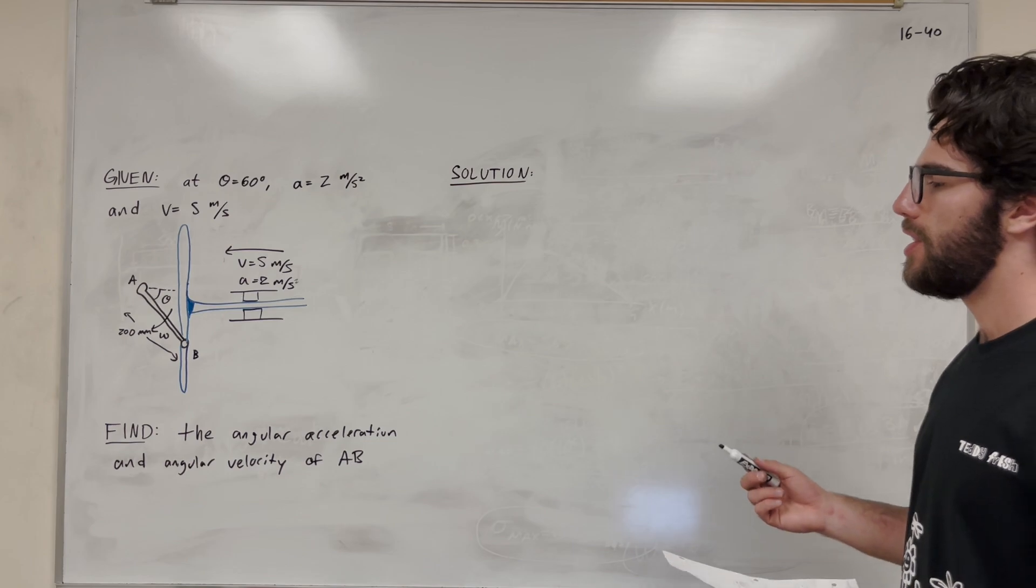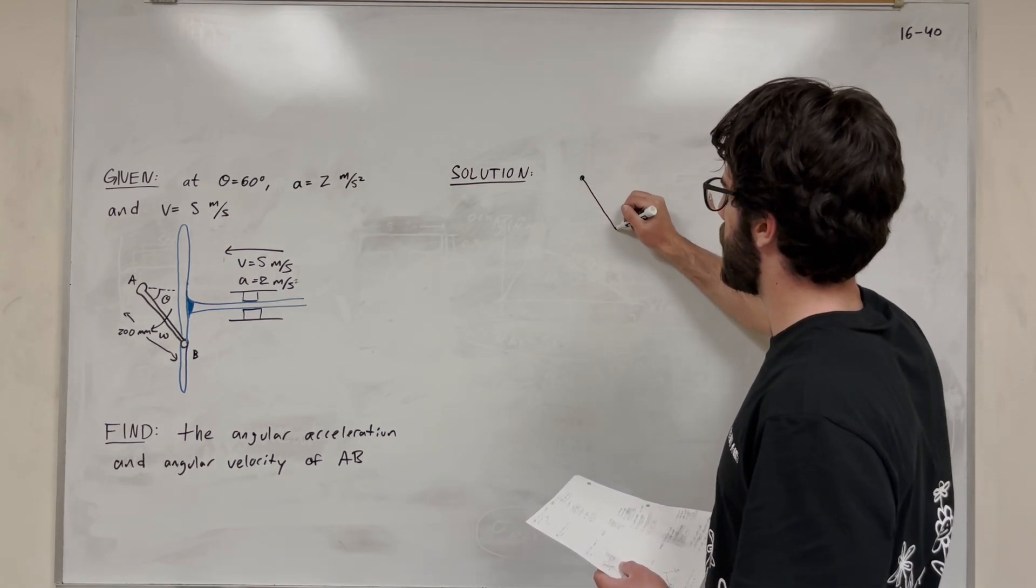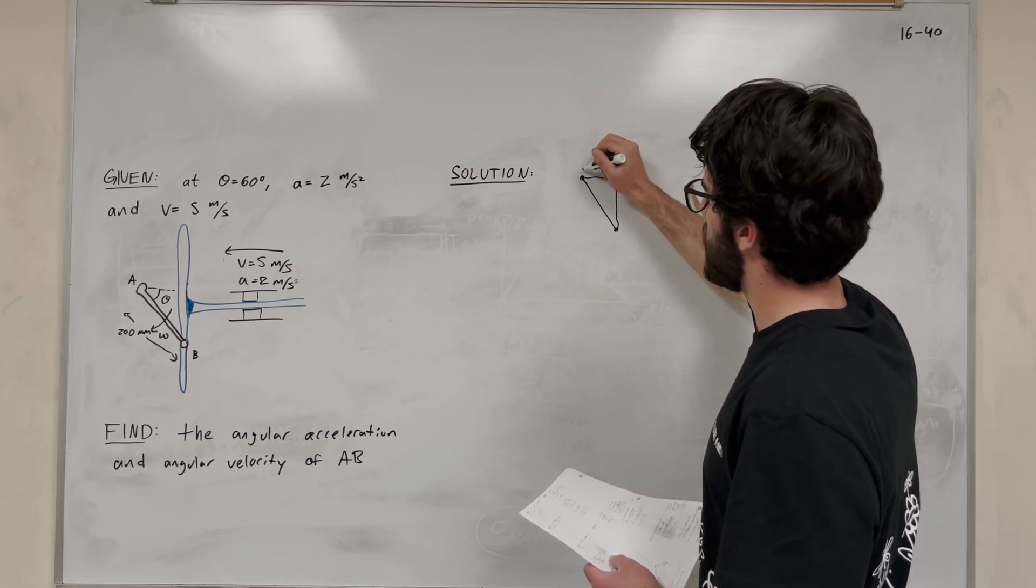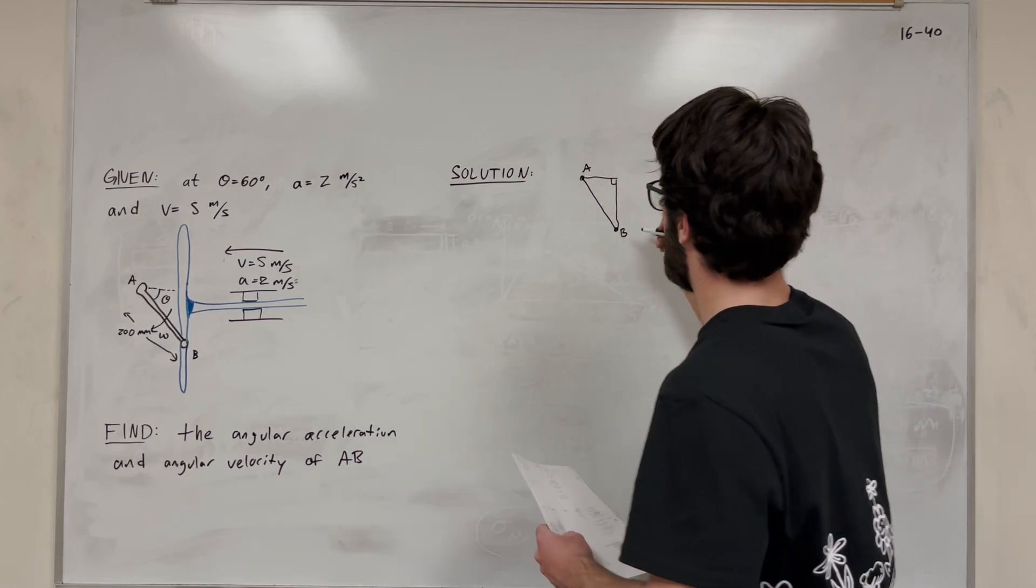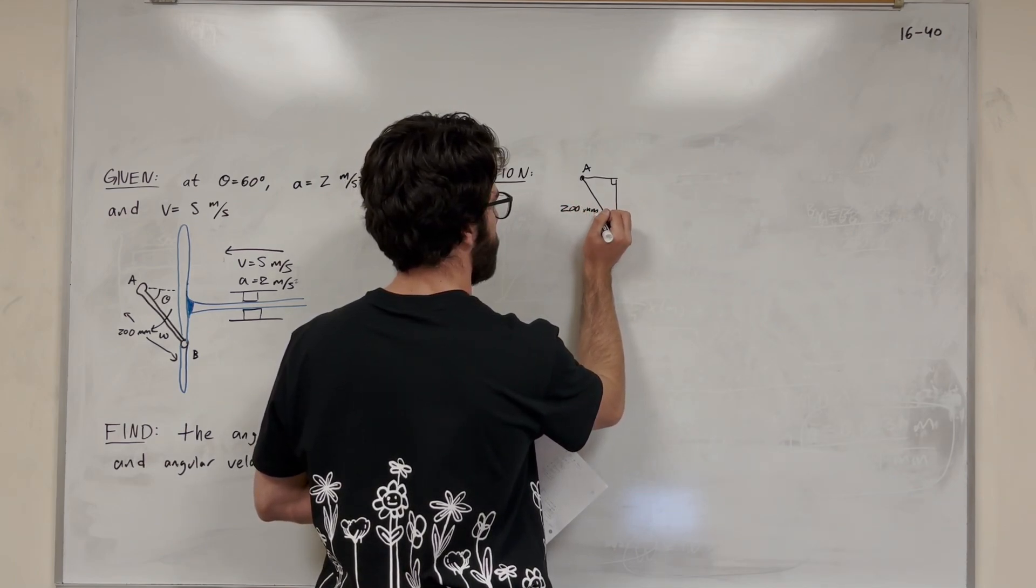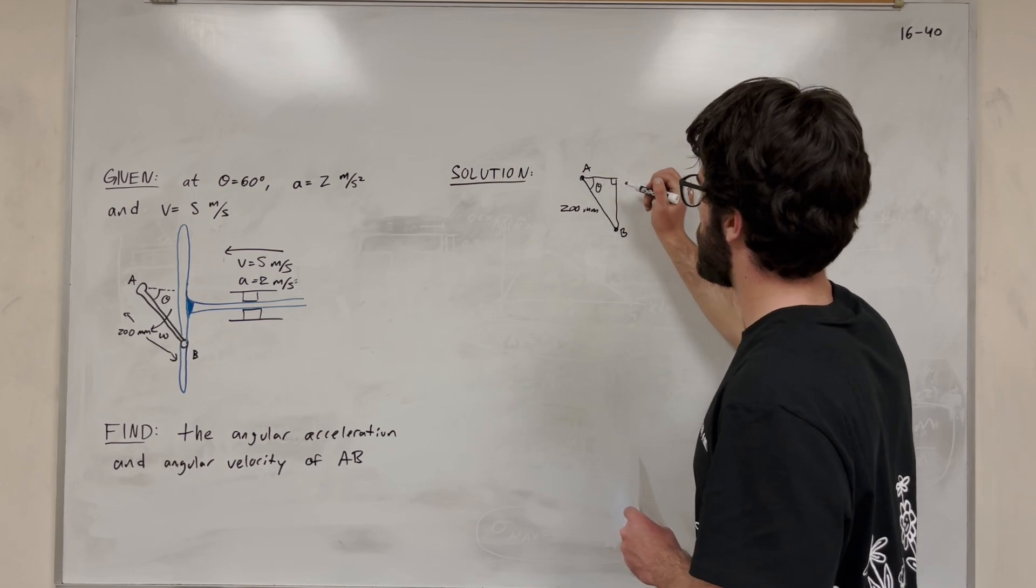So let's solve for that. First of all, let's draw our little triangle here, and let's just try to figure out intuitively what's about to happen. So this is point A, and this is point B. We go out length is 200 millimeters. And this theta is equal to 60 degrees, so let's label that theta.